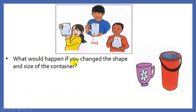Now what would happen if you change the shape and size of the container? For example, if I am using this bucket, then these 3 jugs can easily fill the bucket, and this bucket still has more capacity than this cup.